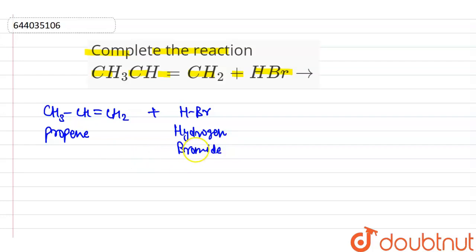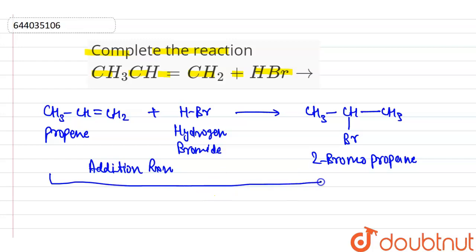When alkene reacts with hydrogen halide, this reaction is called addition reaction. In this process, we get CH3CHBrCH3. We get 2-bromo propane, and the complete reaction is called Markonikov rule or Markonikov addition.